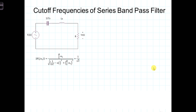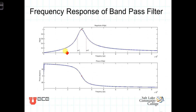We'll now calculate the cutoff frequencies associated with the bandpass filter. By cutoff frequencies, we're talking about the frequencies where the magnitude of the transfer function is equal to 1 over the square root of 2 times the maximum value of the transfer function. As we saw in the previous videos, the maximum value of the frequency response function occurs at the center frequency, and for a passive filter, that maximum value is 1. So we're looking at where the frequency response has a magnitude of 1 over the square root of 2 times 1, or 0.707.